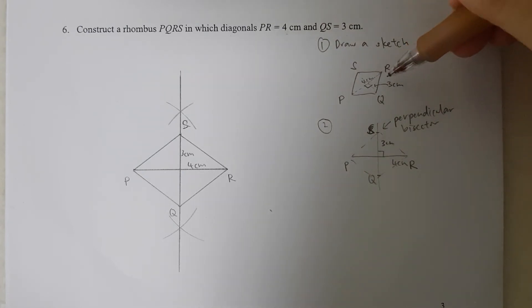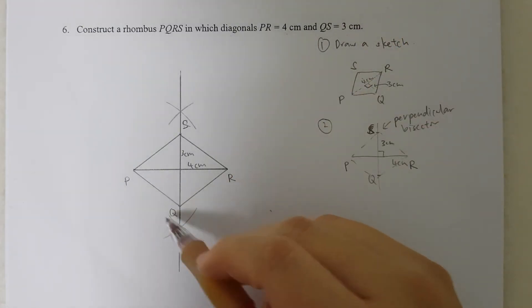For a rhombus, I know that the two diagonals actually cut each other at 90 degrees. So that is why I decided to use the perpendicular bisector of line segment PR to help me get the points Q and S.